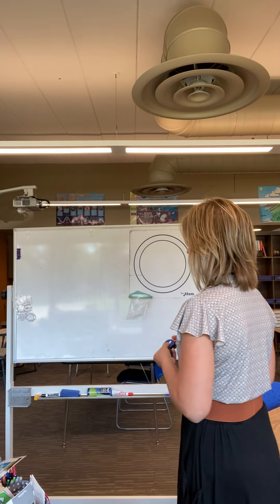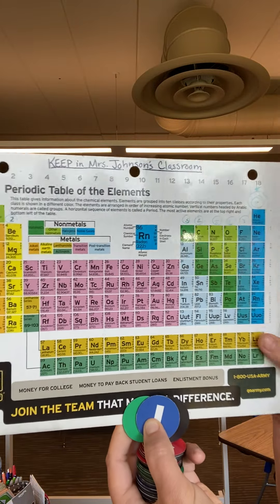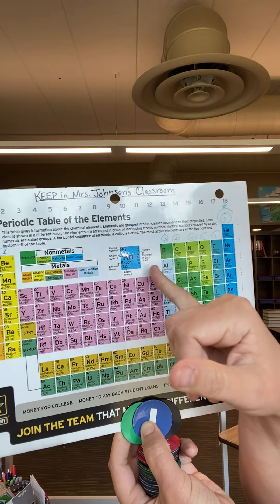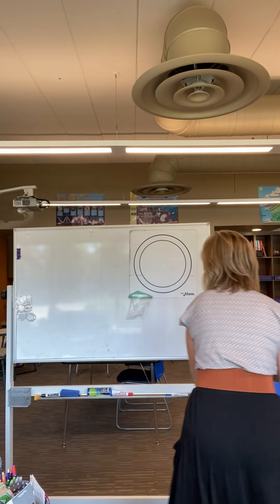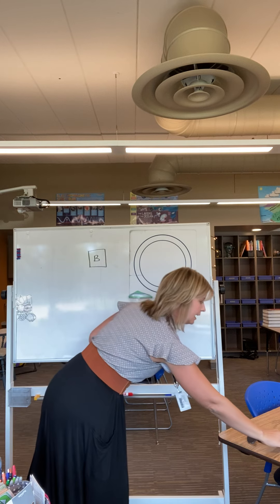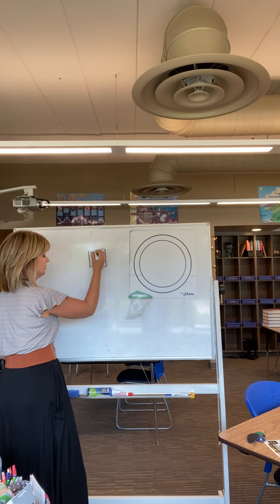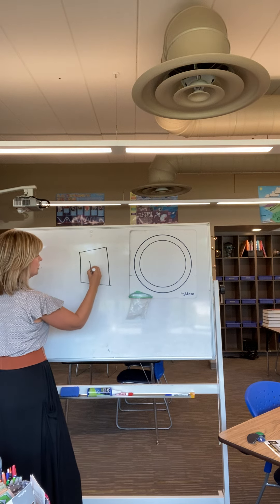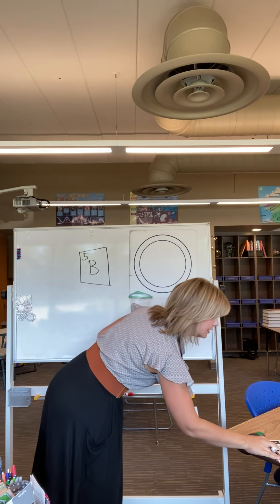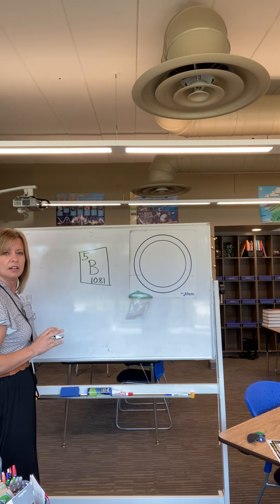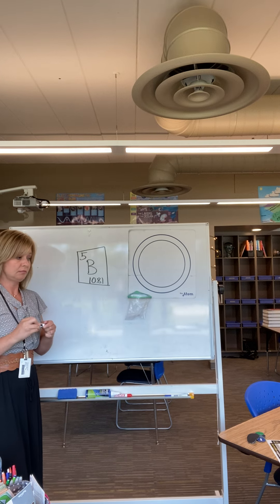If you pick an element on the periodic table, let's try boron. I'm going to rewrite what boron looks like from the periodic table. Boron has a symbol of B, an atomic number of 5, and a mass number of 10.81. These are values that are on the periodic table for every single element.